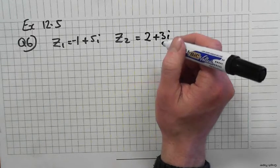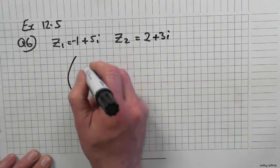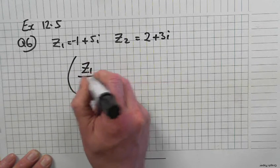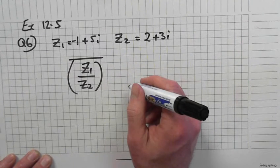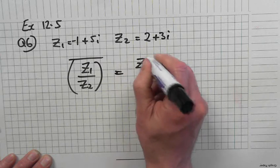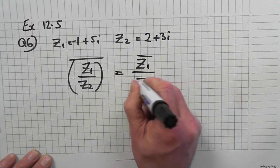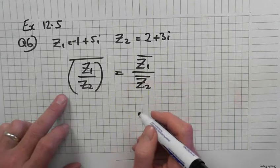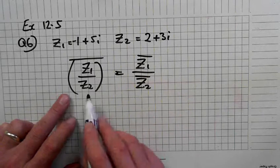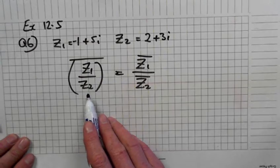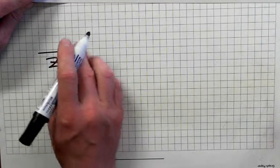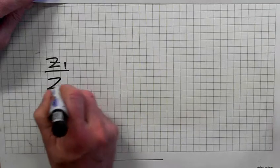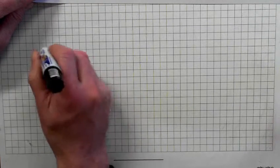Right. Investigate if Z1 over Z2 conjugate is equal to Z1 conjugate divided by Z2 conjugate. So first of all we'll do the left hand side. So first of all we'll do Z1 divided by Z2, and then we'll do the conjugate later.